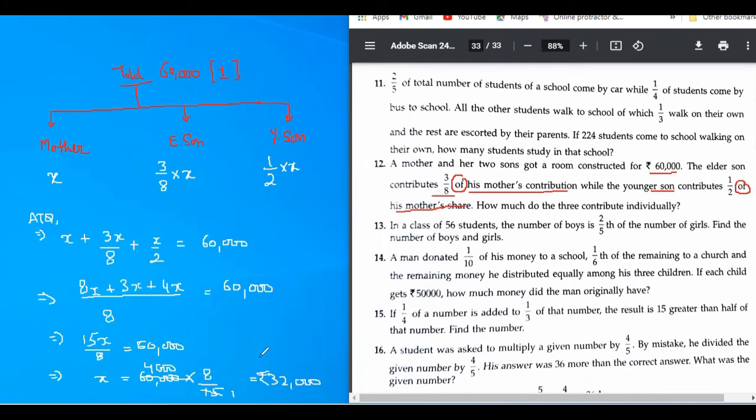So, this much is the mother's contribution. And now we need to find the fraction. So, now we need to find 3/8 and half. So, half will be 16,000. Yeah, half will be 16,000.